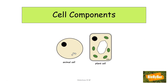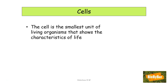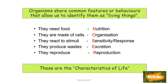Let's sort out cell components by first looking at cells. Cells are the smallest unit of living organisms that show the characteristics of life. The characteristics of life are a number of features that living things have in common and that allow us to identify them as living.